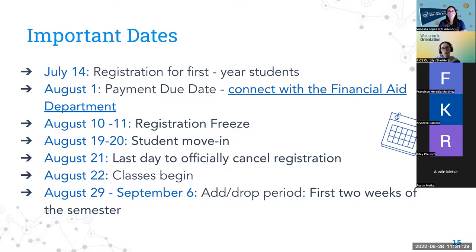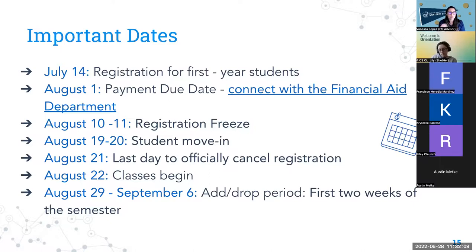Starting week three, it becomes very challenging to drop or add classes — you need instructor permission, typically for a medical reason. Saying you have too many units or that material is too hard is not sufficient; you should be attending tutoring, meeting with TAs, or going to the Cooperative Learning Center for math and writing. Be mindful of how many units you're registering into your first semester, and if you do need to drop classes, please connect with me so we can find a solution.